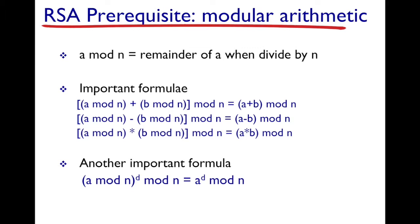Some important formulae related to modular arithmetic are given here. For example, if you take (a mod n) and add (b mod n) to it and then do a mod of n to this entire addition, it will be same as (a+b) mod n. The same thing holds true if you substitute the addition by subtraction or with multiplication.